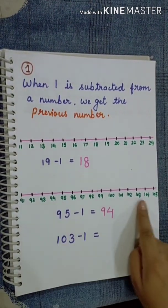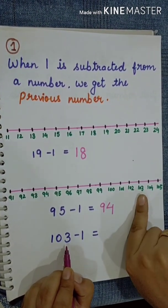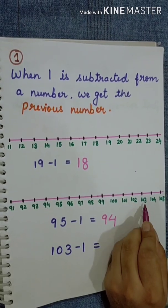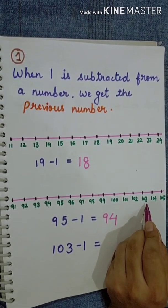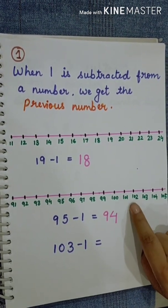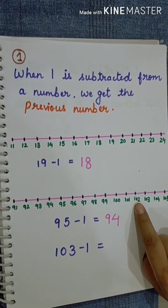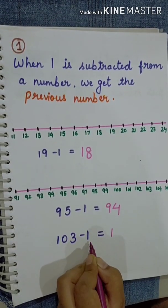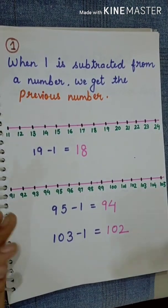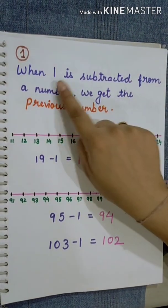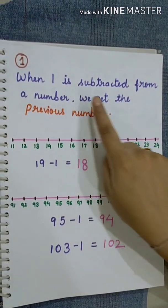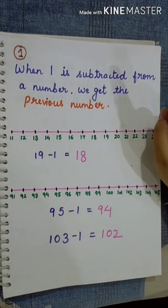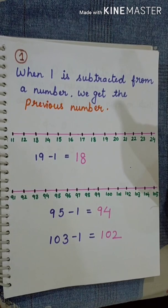Let's take another example — number 103. I have taken number 103. Here is number 103. When we subtract number 1 from 103, which number will we get? Number 102. And number 102 is also the previous number of number 103. So 103 minus 1 is equal to 102. This property is proved: when 1 is subtracted from a number, we get the previous number.